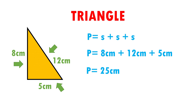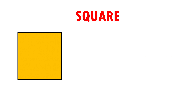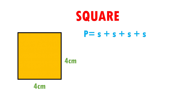That is the perimeter of this triangle. Very easy, right? Let's see another example. Here I have a square and it has measurements of 4 times 4. This means that each of the sides measures 4 cm. The formula to calculate the perimeter of the square is perimeter equals side plus side plus side plus side, because it has 4 sides.